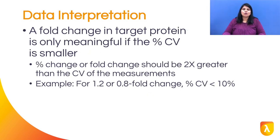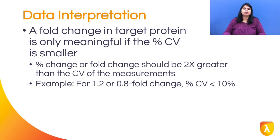Furthermore, a fold change in target protein is only meaningful if the percent CV is small. In general, the percent change or fold change should be two times greater than the CV of the measurements. Thus, if the fold change is say 1.2, your percent CV should be less than 10%.